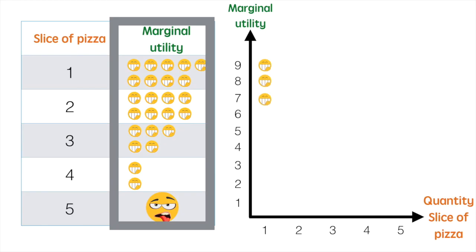For the first slice, I had a marginal utility of 9. The second slice, 8. The third slice, 6. And the fourth slice, 2.